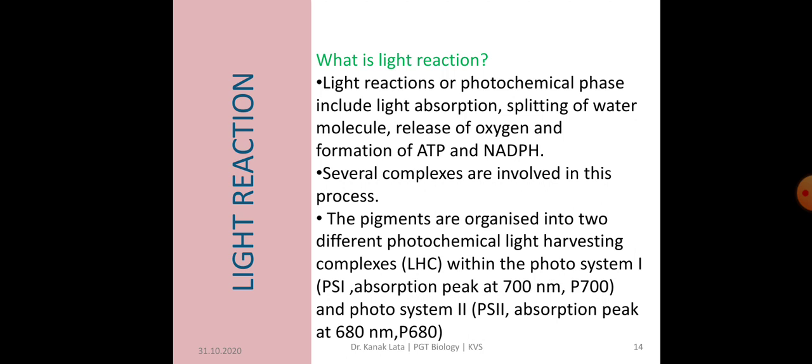Each photosystem has all the pigments except one molecule of chlorophyll A, forming a light harvesting system called antenna. The single chlorophyll A molecule forms the reaction center. The reaction center is different in both the photosystems. In photosystem 1, the reaction center chlorophyll A has an absorption peak at 700 nanometer.